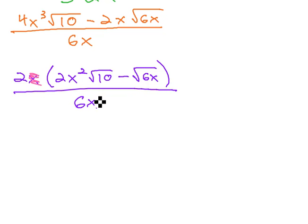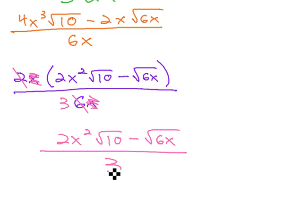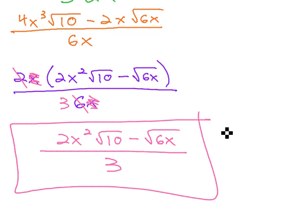And now I can go back and reduce the factors of x, and 2 reduces with 6 leaving a 3 behind. And so we end up with the final solution of 2x squared root 10 minus the square root of 6x, all over 3.